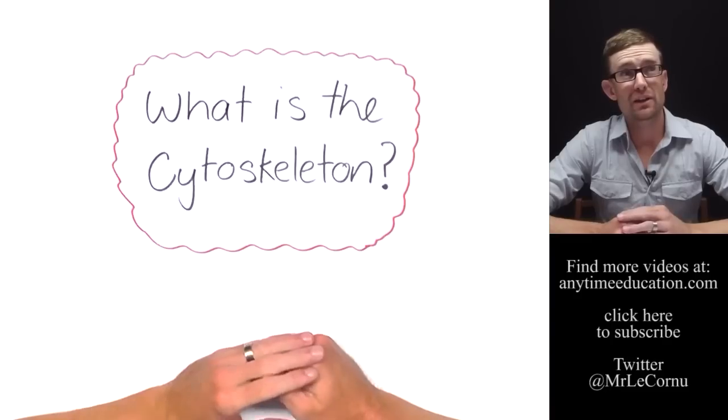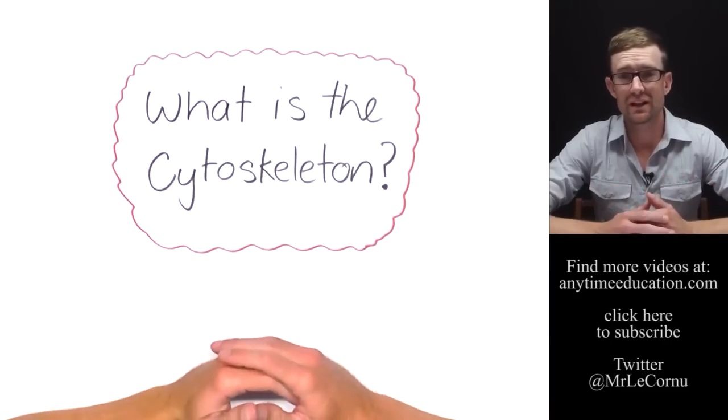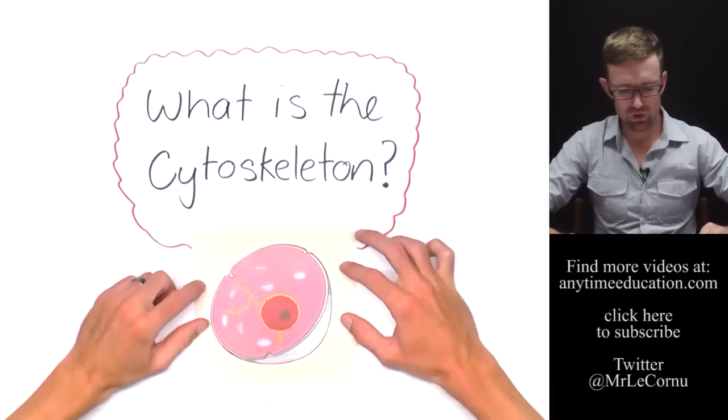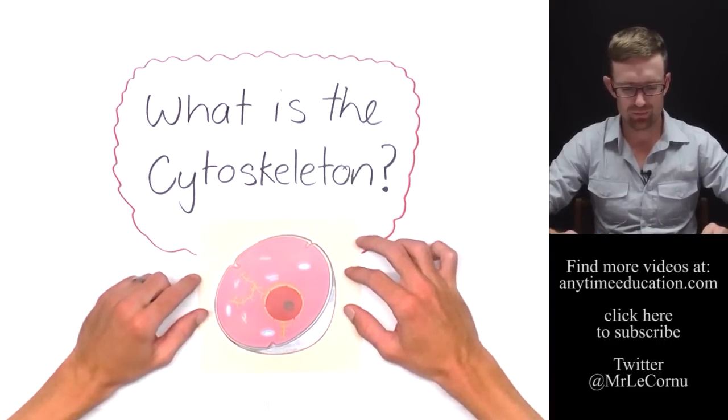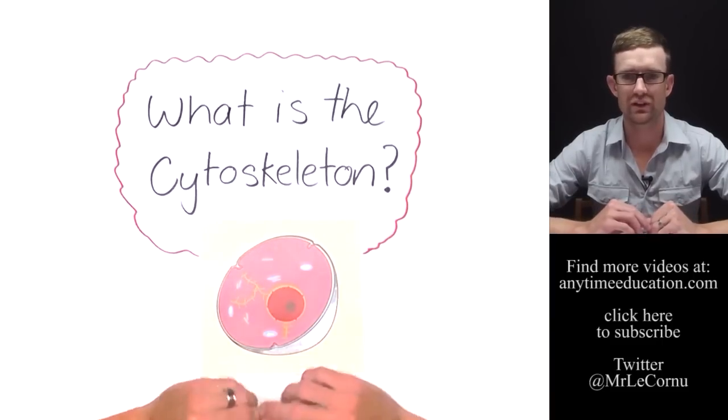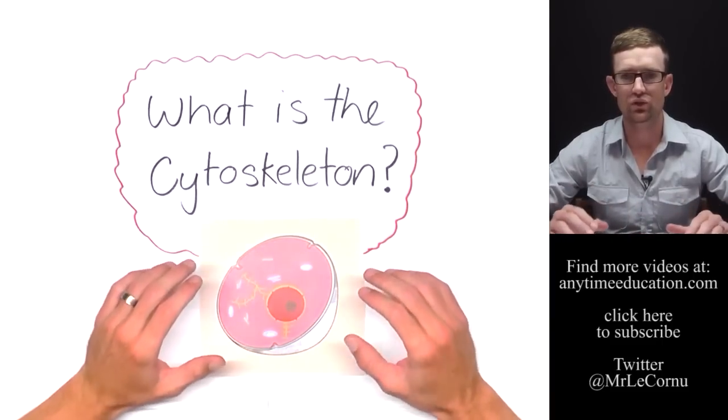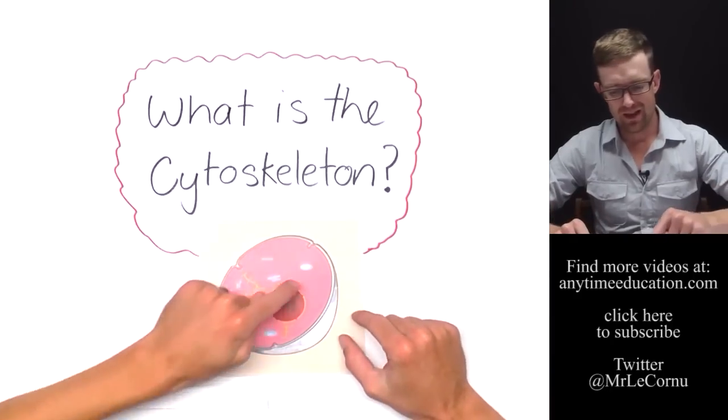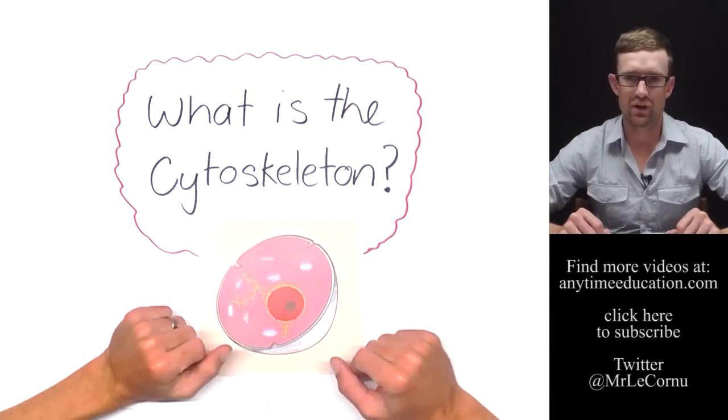Cyto might make you think cytoplasm. It's found in the cytoplasm of eukaryotic cells. Now that's quite important when we're talking about the cytoskeleton, we're talking about eukaryotic cells. It's found inside of them and it's attached to the cell membrane.